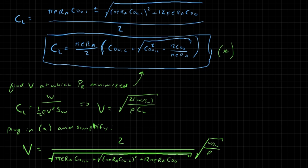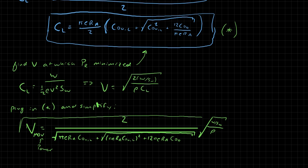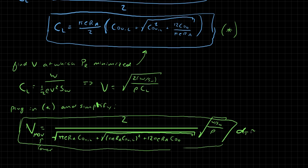This velocity is called the minimum power required airspeed, and we denote it V_mdv, where 'dv' stands for power. Remember this airspeed was derived under the assumption that the thrust angle is small. We won't cover what happens if the thrust angle is not small, but you could work it out following the same procedure — it will just be a little more involved.